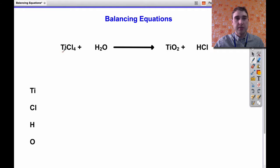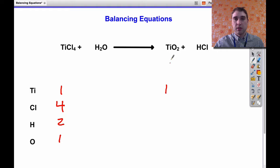The first thing I'm going to do is write down how many of each element I have. On this side I've got one titanium — no number after it so it's one. I've got four chlorines, two hydrogens, and one oxygen. On the other side I've got one titanium, two oxygens, one hydrogen, and one chlorine. I can immediately see I've got problems — my numbers of chlorine, hydrogen, and oxygen are all off.